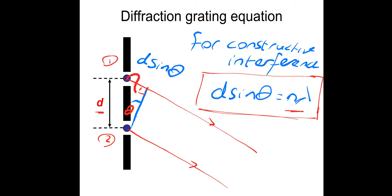For constructive interference, if we have a whole integer number of wavelengths - so that might be one wave or two waves - when they start, the starting phase means they need to be coherent. Coherent means the same frequency and a constant phase relationship. Hopefully that clears up where the equation comes from.